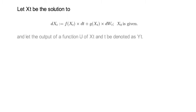Let the function U be a function of Xt and t. The output to that function is what we denote as Yt. So Yt can be written as simply the output of the U function that takes t and Xt as input.